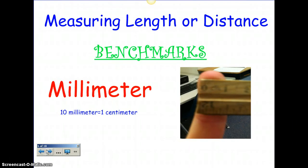Next we have a millimeter. Ten millimeters equal one centimeter. So if a centimeter is the distance across the tip of your finger, a millimeter is about across the tip of your nail, because it's way smaller — you need ten of them to make one centimeter. So a millimeter is smaller than a centimeter.